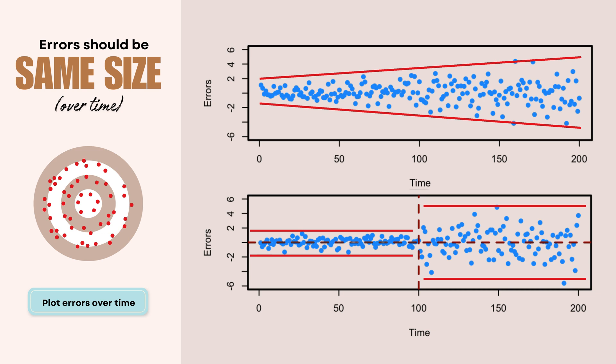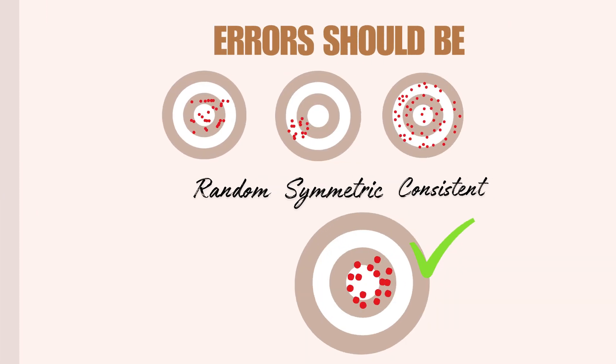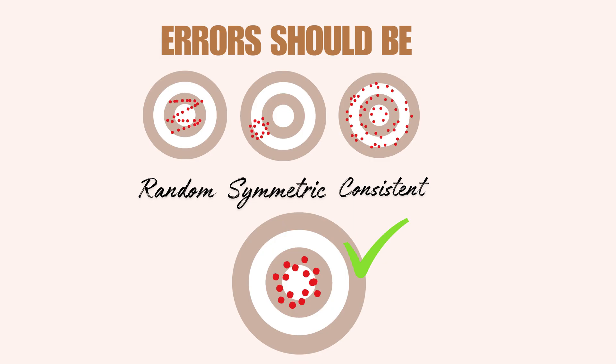If you find your inconsistent errors, there are a few things that you can do. You can either consider transforming your data, for example, taking logs. You can also use weighted methods that adapt to changing variance. Or you can split your analysis at clear change points. So whenever you use forecasting with time series data, make sure to always check if your forecast is actually accurate by checking for random errors, symmetric errors, and consistent error size over time.